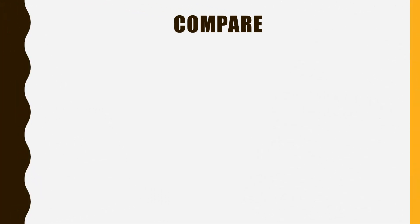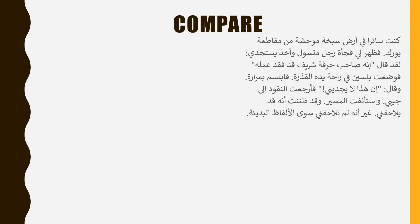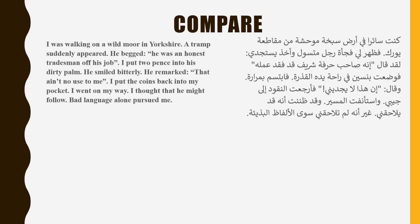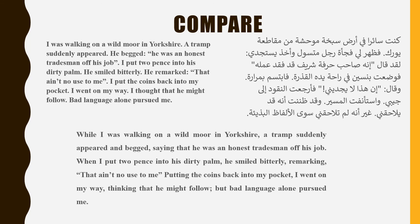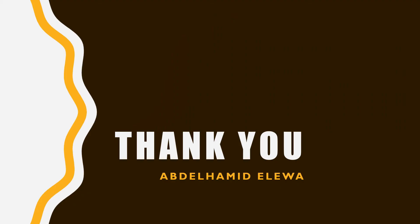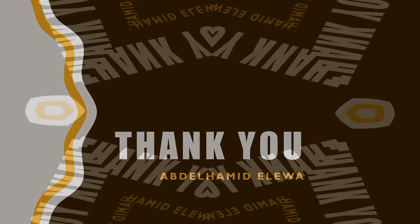So we can conclude that the translator from Arabic into English should pay attention to sentence length in the target language. The translator can merge sentences to form longer sentences, as in the following example. You can notice that the first translated version contains short sentences, while the second merges sentences together to make it closer to the English literary style. Thank you.